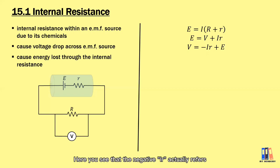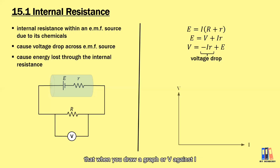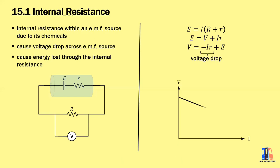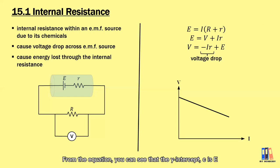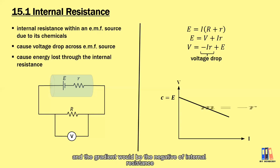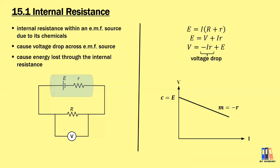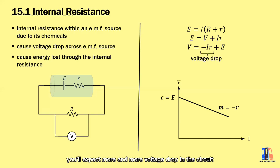The term −Ir refers to the voltage drop across the internal resistance. When you draw a graph of V against I, you get a straight line graph that decreases linearly. From the equation, the y-intercept is the EMF source and the gradient is the negative of the internal resistance. From the graph, as current increases, we expect more and more voltage drop in the circuit.